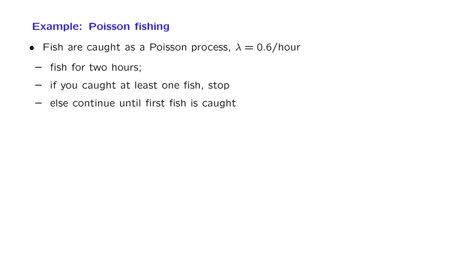In this segment, we go through an example to get some practice with Poisson process calculations. The example is as follows: you go fishing, and fish are caught according to a Poisson process with an arrival rate — that is, the rate at which fish are caught — of 0.6 fish per hour.